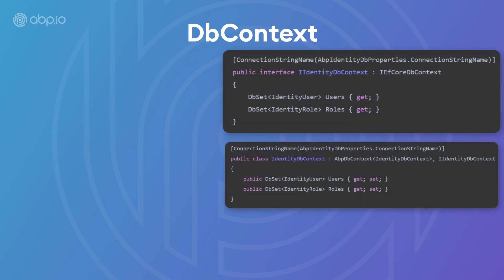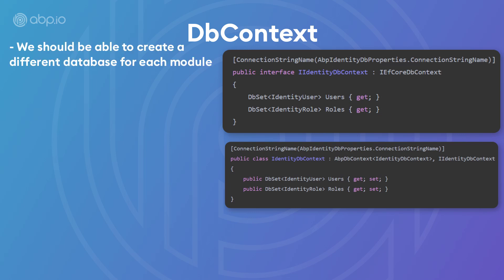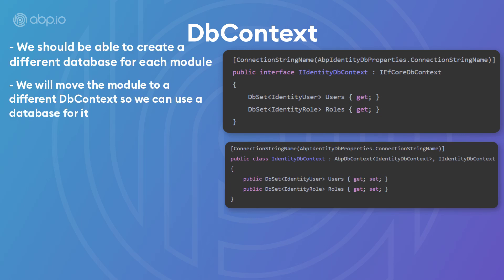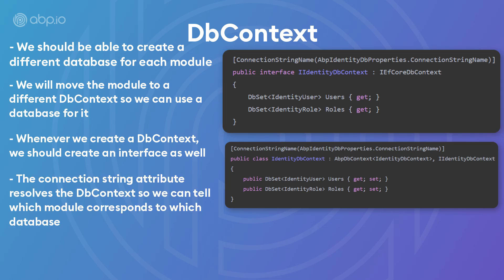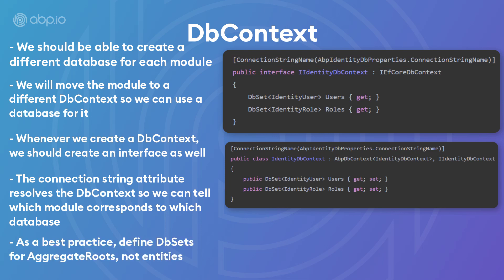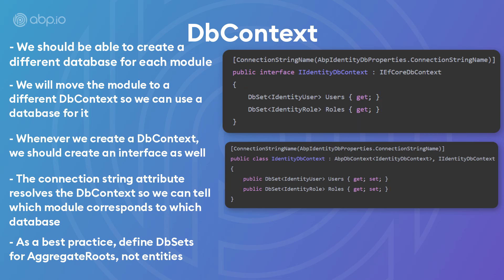When we're dealing with a bunch of modules, we should be able to create a different database for each one. To do that, we're going to have to create a DbContext for each module, and we should create an interface as well. We're going to use the connection string attribute to resolve the DbContext so we can tell which module corresponds to which database. As a best practice, define the DbSets for aggregate roots rather than entities, because we're going to reach the entities through the aggregate roots. It is the aggregate root's responsibility to maintain the integrity of entities.